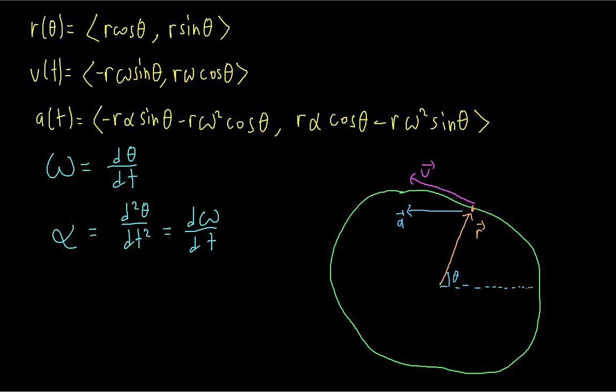Now let's look at what we have so far. We have the position, velocity, and acceleration vectors. We also have the quantities ω and α, which are the derivatives of the angle in our picture. We have the acceleration, but the problem is the acceleration is pointing in some random direction, and we want to separate it into its two components.